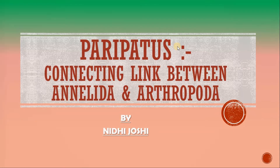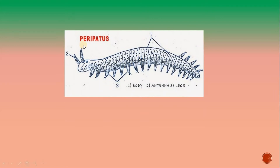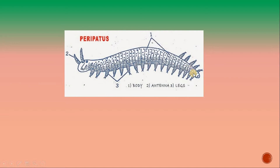Now we get into the topic. First of all, you have to see Peripatus. Here is the head, antenna, and the segmented body. These are legs or parapodia — unjointed legs. The anatomical peculiarity of Arthropoda is jointed legs, but in Peripatus these are unjointed legs — these are parapodia.